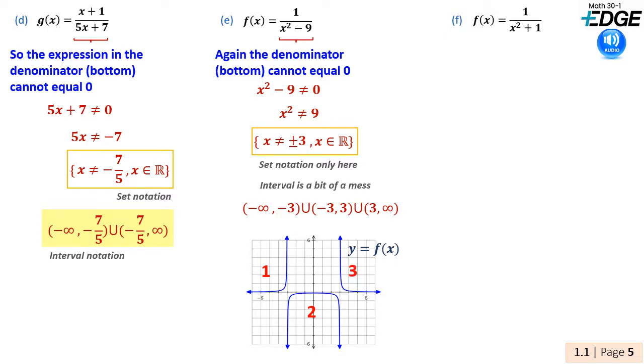In part E, we again begin by stating that the denominator cannot equal zero. That is the only possible restriction from this example. If x squared minus 9 cannot be zero, then x cannot be positive 3, nor can it be negative 3.